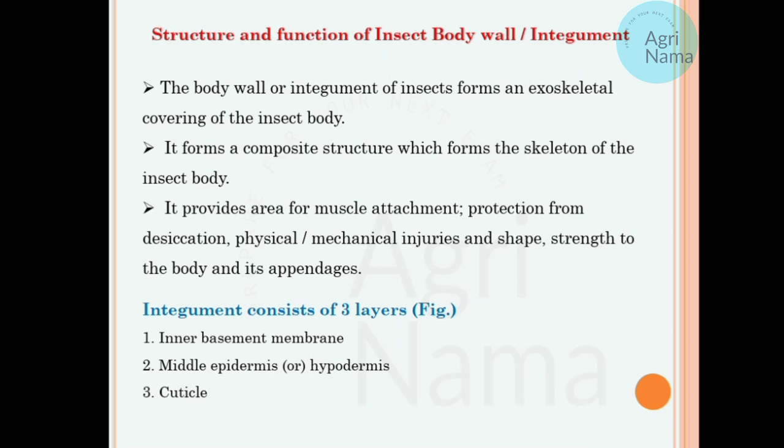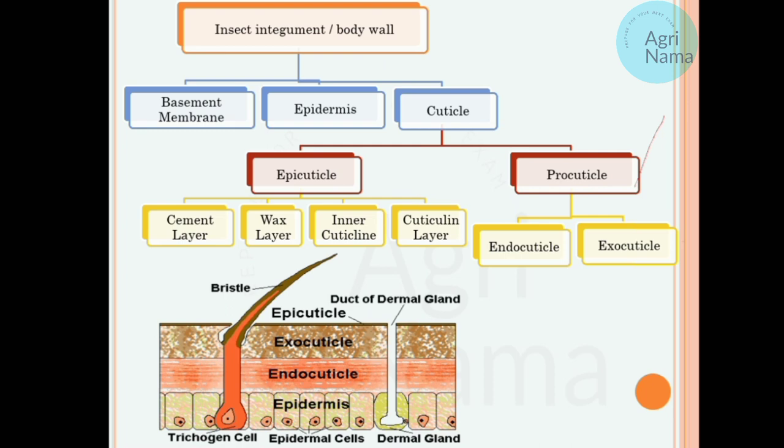Looking at the diagram, the insect body wall is divided into basement membrane, epidermis and cuticle. Cuticle is further divided into two parts: epicuticle and procuticle. Epicuticle is divided into four layers: cement layer, wax layer, inner cuticulin, and cuticulin layer. Procuticle is divided into two: endocuticle and exocuticle.